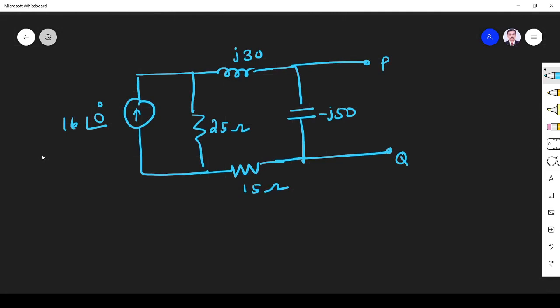So Norton current I have to find. Norton current is nothing but short circuit current across the terminal which is asked, across P and Q only they are asking. So we have to find current through this. First short it. That's what Norton is, short circuit current. So first short the terminal and find the current. That current is nothing but Norton current.